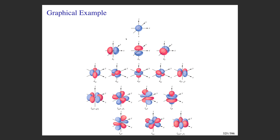The three p orbitals are distinguished by their three values of m_l, the five d orbitals by their five values of m_l, and there are seven values of m_l for f orbitals. We really need to know the s and p orbitals quite well, be familiar with d orbitals, and don't need to know too much about f orbitals in general chemistry.